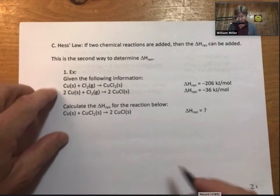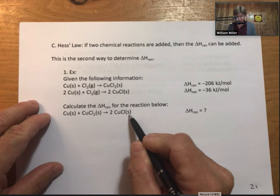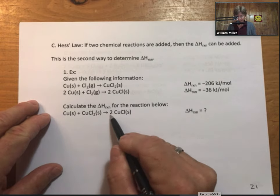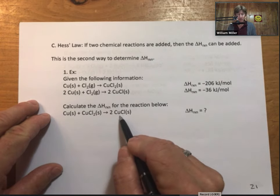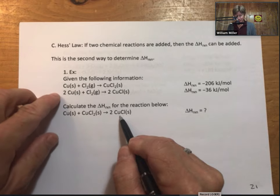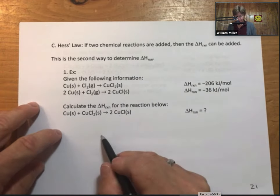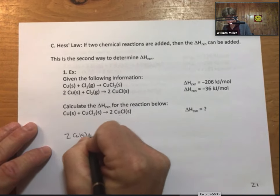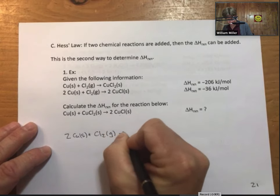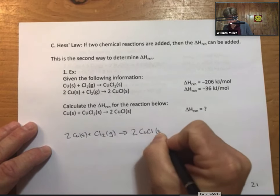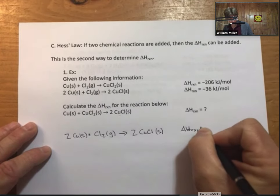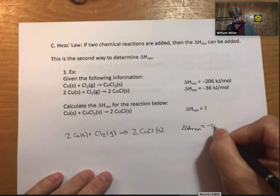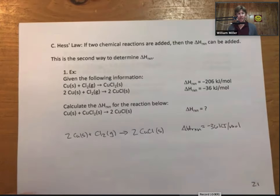It goes something like this. I want to create this reaction out of the above two reactions. I can see that two CuCl solid is also a product in one of my reactions, same as it is in the reaction I'm trying to make. So what I'm going to do is I'm going to take this reaction up here and write it down here just exactly like it is with its delta H reaction minus 36 kilojoules per mole.